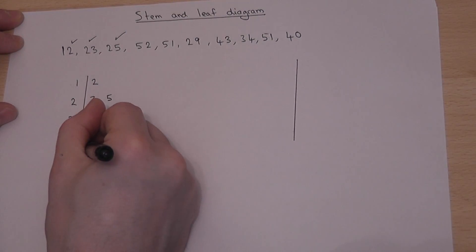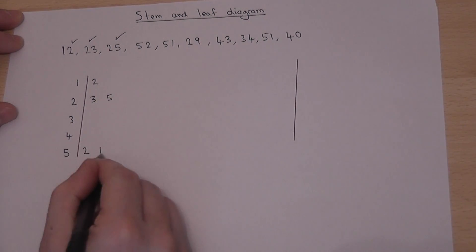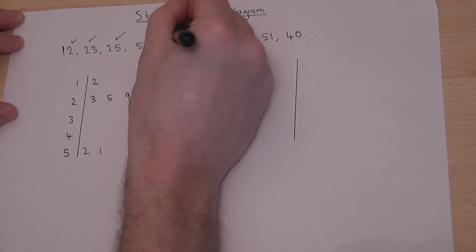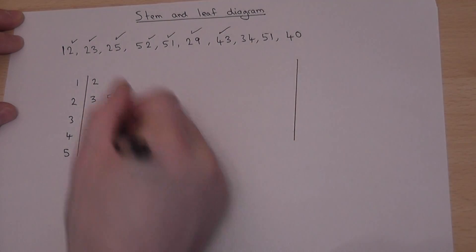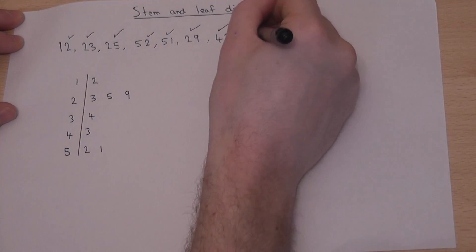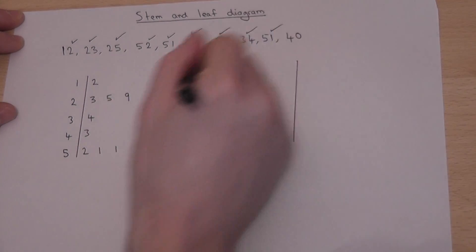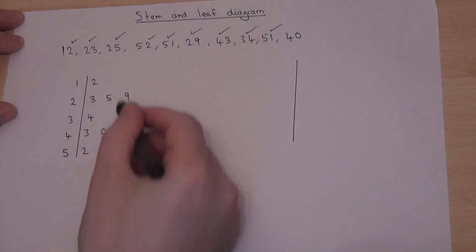52 is 52, then a 51, 52, 51, a 29, a 43, a 34, a 51, another one, and a 40. Look how I've lined all the numbers up nice and carefully.